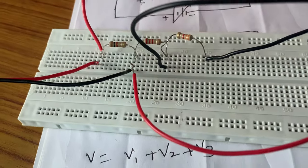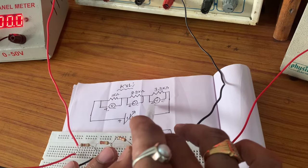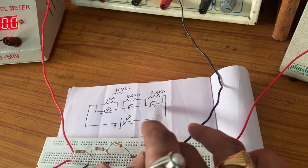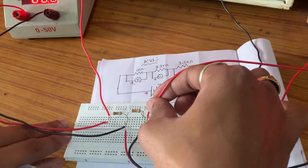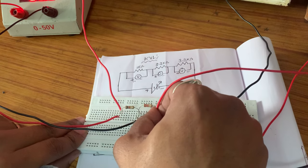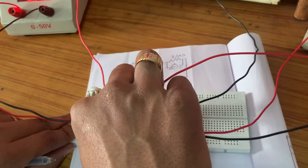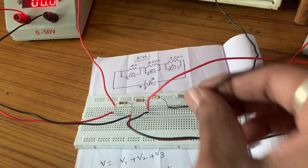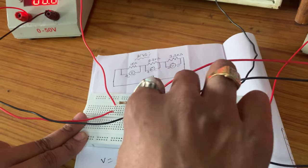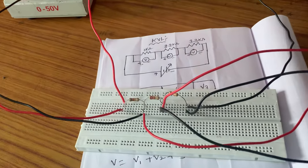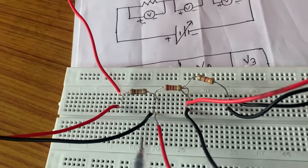V1 and V2 voltmeters are connected. Now I am connecting V3. V3 positive is connected to the 3.3 kOhm first terminal, and V3 negative is connected to the 3.3 kOhm second terminal. Anything connected on the breadboard should be connected vertically. This is the total circuit connected on the breadboard.